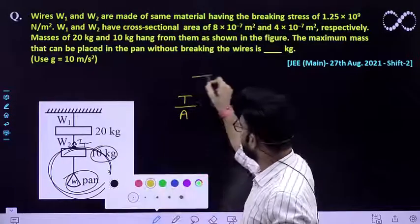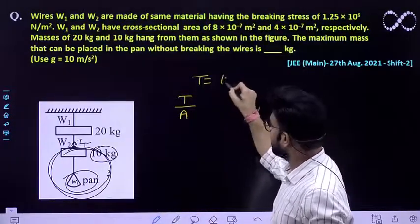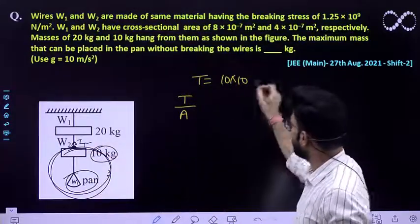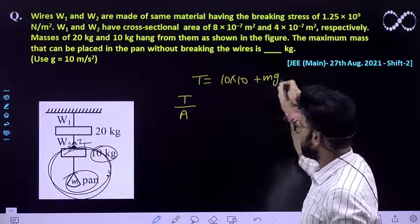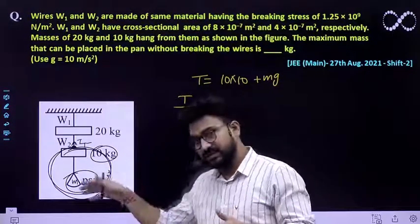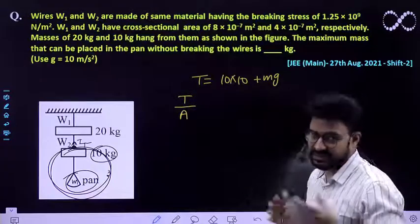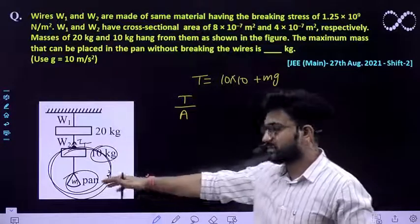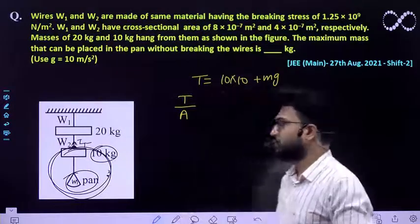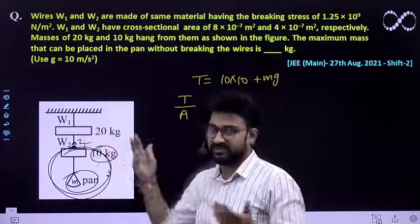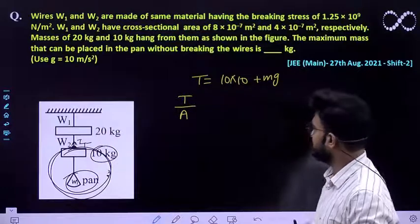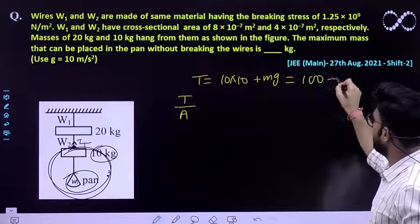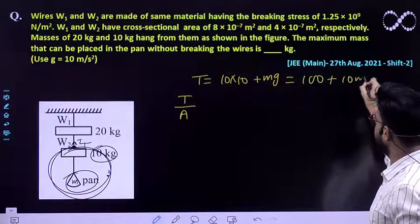The weight of these two would be the tension in wire W2. This tension equals the weight of the block plus the weight of the mass in the pan. The mass of the pan is not given, so we assume the pan doesn't have any mass, and this wire also doesn't have any mass to consider. So this tension is 100 plus 10m.